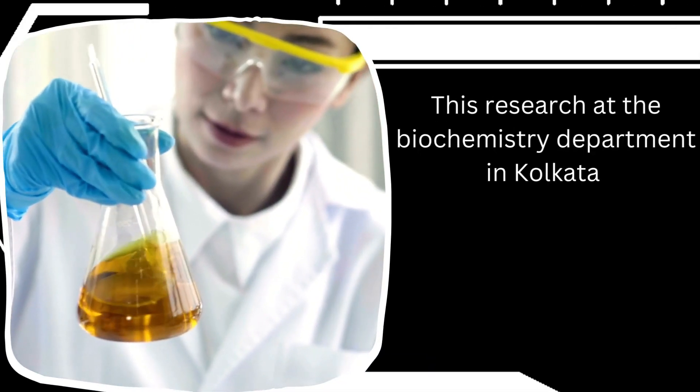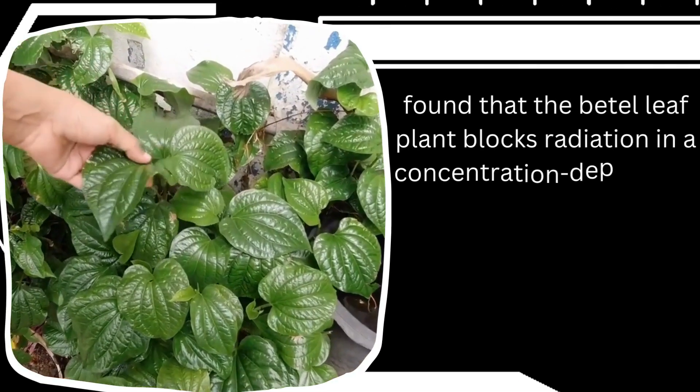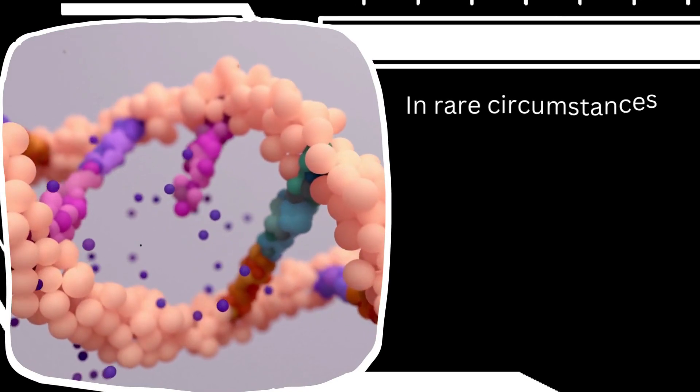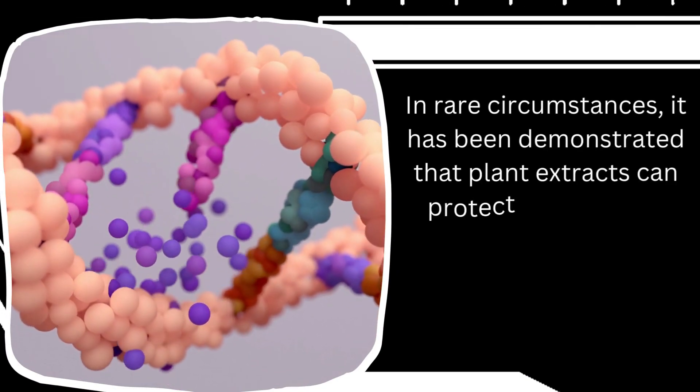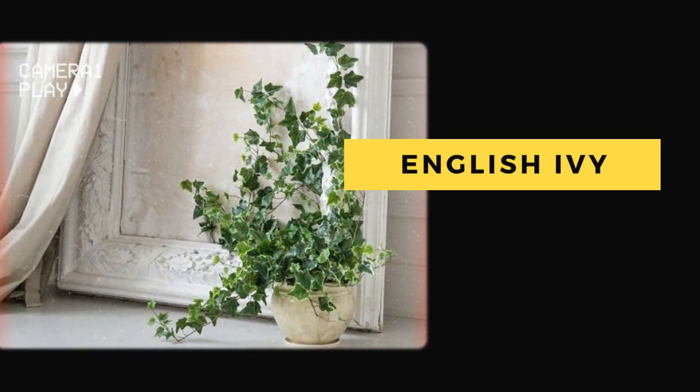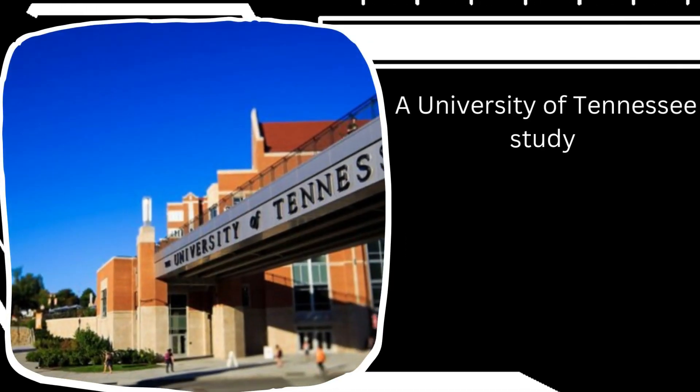Research at the Biochemistry Department in Kolkata found that the beetle leaf plant blocks radiation in a concentration-dependent manner. In rare circumstances, it has been demonstrated that plant extracts can protect DNA against radiation. A University of Tennessee study found that English ivy has nanoparticles that are good at absorbing UV radiation.